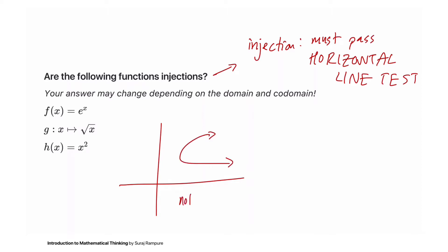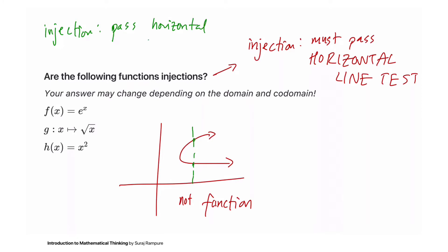For example, this is not a function because you draw your vertical lines and it hits two different points. For a function to be an injection, it has to pass both the vertical line test — so it has to be a function — but it also has to pass the horizontal line test. An injection has to pass both the horizontal and vertical line tests.